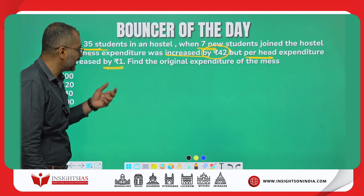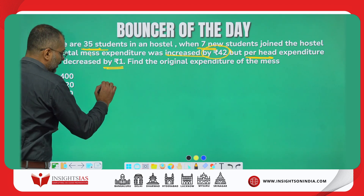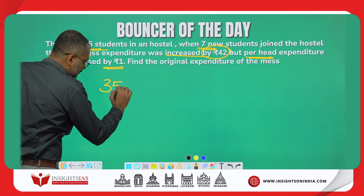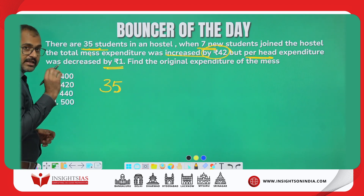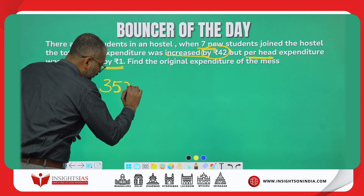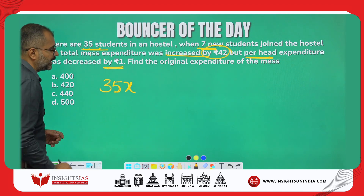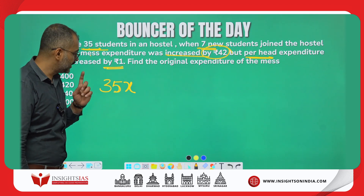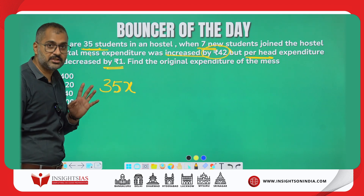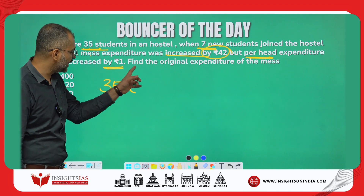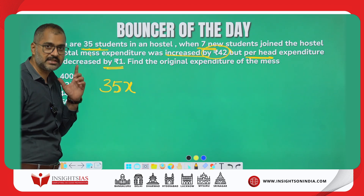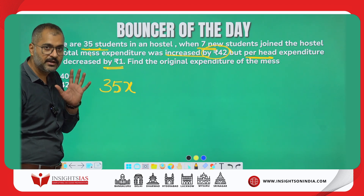35 people are there. Let's say each were paying x rupees per day. So 35x is the total original cost. The question asks to find the original expenditure — if you know the x value, then 35x is your answer.